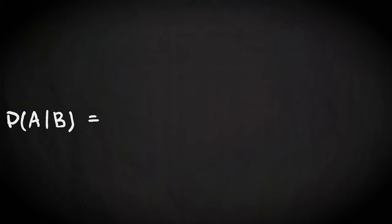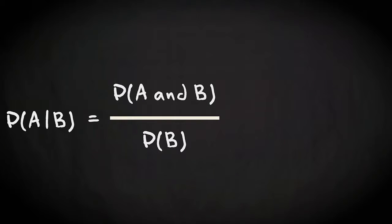A conditional probability of A given B is calculated by the probability that events A and B occur together, divided by the probability that event B occurs. So, the joint probability of A and B divided by the probability of B.